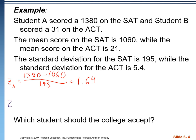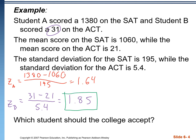For student B, we take the data value, subtract the mean of 21, and divide by the standard deviation of 5.4, giving a z-score of 1.85. Both z-scores are positive, so both test scores are above the mean — both students are above average. Since student B has a higher z-score, their test score was farther above average than student A's. Relatively speaking, the ACT score was a better performance. So all other things being equal, the college should accept student B.